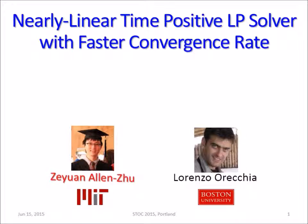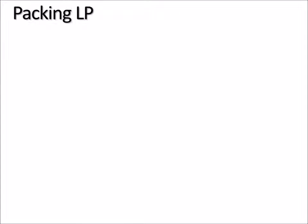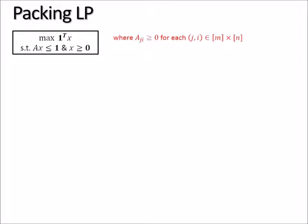Hi everyone, so you could hear me, right? So this talk is about positive LP. Let me begin by defining what positive LP is. This name was put forward by Luby and Nissan back in 1993, and it basically captures the following pair of LPs. One is the packing LP: maximize 1^T x subject to Ax ≤ 1 and x ≥ 0. In addition, we require the matrix A to be non-negative. This is the packing LP.